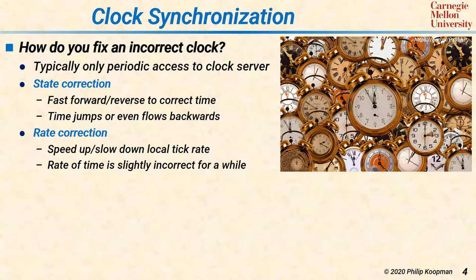Rate correction permits the time to be slightly incorrect for a while while you're catching up, but the good news is that you're already bad to begin with and you're just slowly making things better. In practice, rate correction is a little trickier because you're running a clock rate control loop. First you have to catch the clock up to real time, but once you have a match to externally validated time, you have to change the rate to home in on the correct rate rather than overshooting.